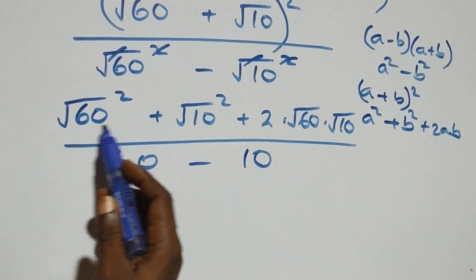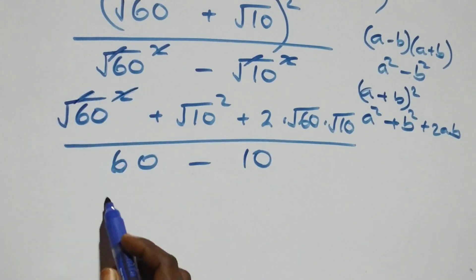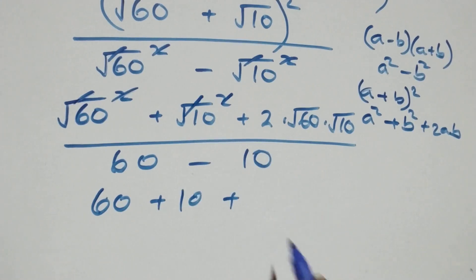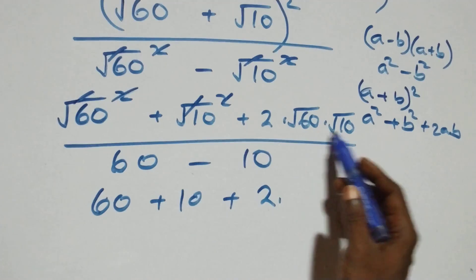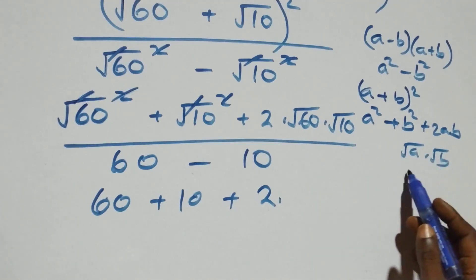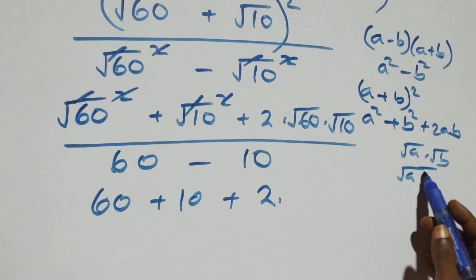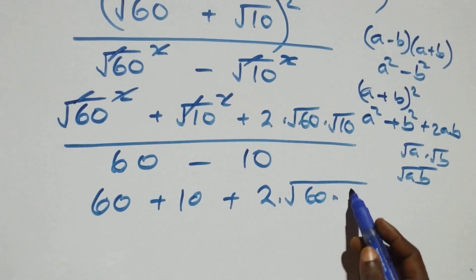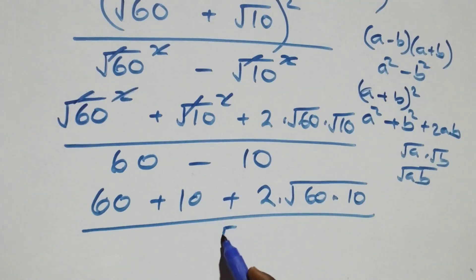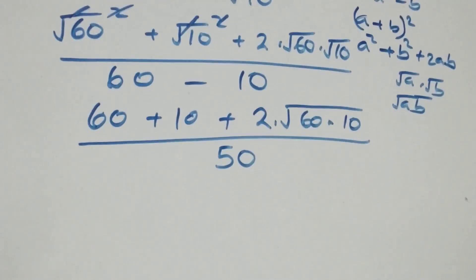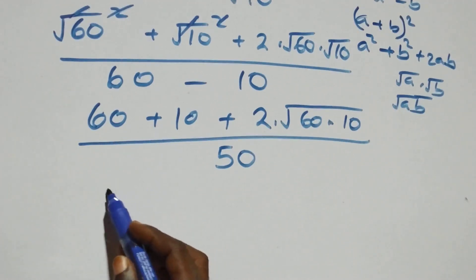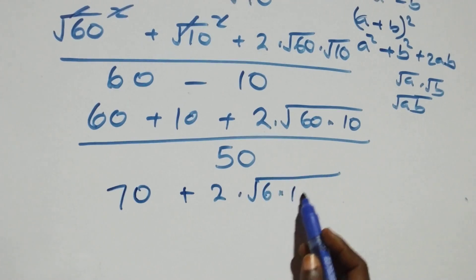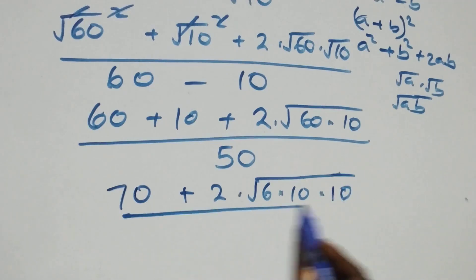This gives us root 60 squared — square cancels square root — that's 60, plus root 10 squared — that's 10, plus 2 times root 60 times root 10, all over 60 minus 10 which is 50. Using the rule that root a times root b equals root of a times b, we combine to get root of 60 times 10. We can write 60 as 6 times 10, so we have root of 6 times 10 times 10, over 50.